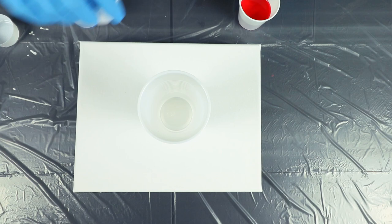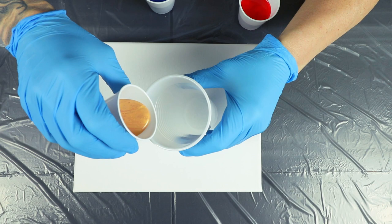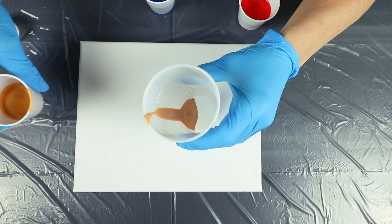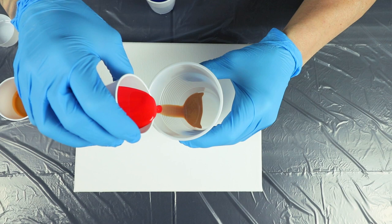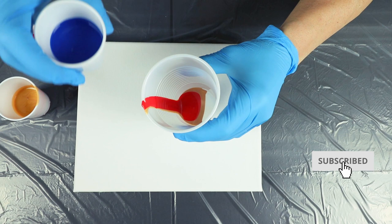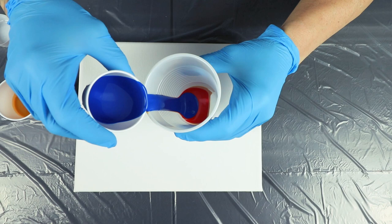So we're going to layer them all in the cup the same way we did in the previous videos and do a flip cup on a dry canvas. In these colors there is no silicone, there's no dimethicone, there's no coconut oil hair serum, because we don't want to generate cells on the pour. We want the cells to come out when we make them with the oil afterwards.